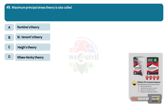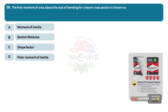Question 49: Maximum principal stress theory is also called? Options: A, Rankine's theory. B, St. Venant's theory. C, Haigh's theory. D, Macy's and Henky's theory. Answer: Option A, Rankine's theory. Question 50: The first moment of area about the axis of bending for a beam cross-section is known as? Options: A, moment of inertia. B, section modulus. C, shape factor. D, polar moment of inertia. Answer: Option B, section modulus.